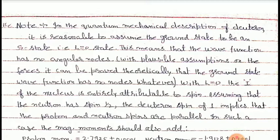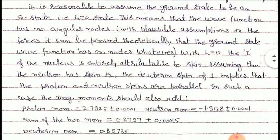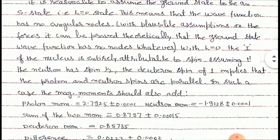The entire value of I is attributed to the spin of the deuteron. Assuming that the neutron has spin half, the deuteron spin of one implies that the proton and neutron spins are parallel — half plus half equals one — so the total spin of the deuteron will be one.